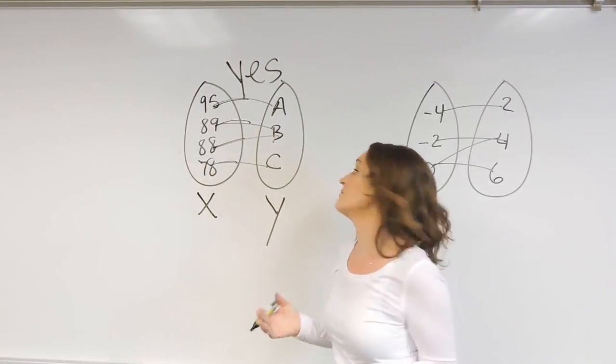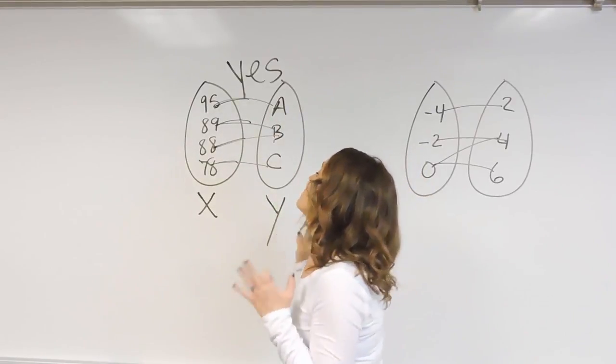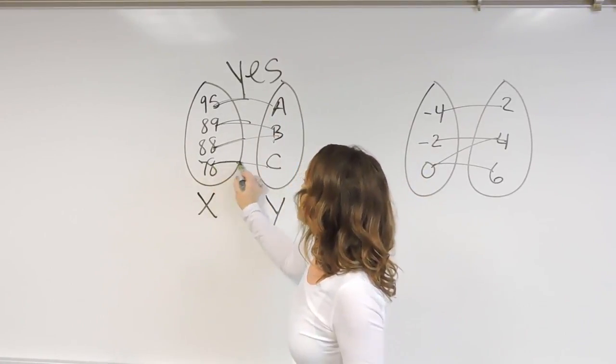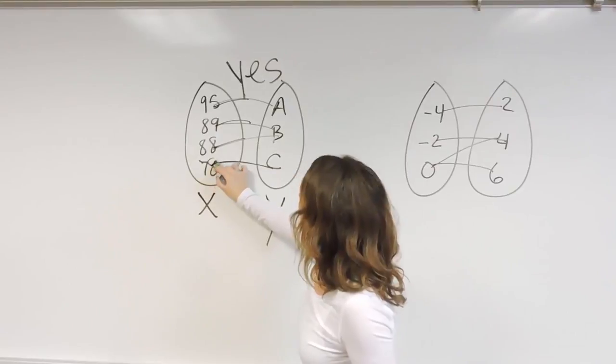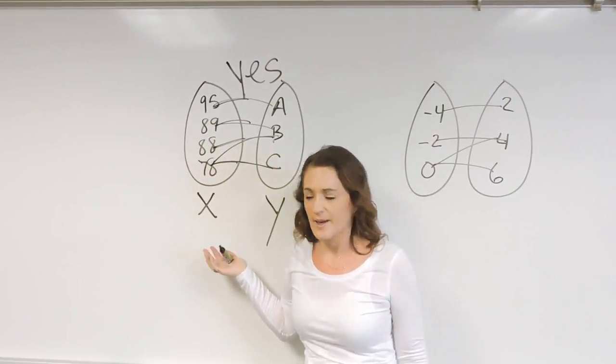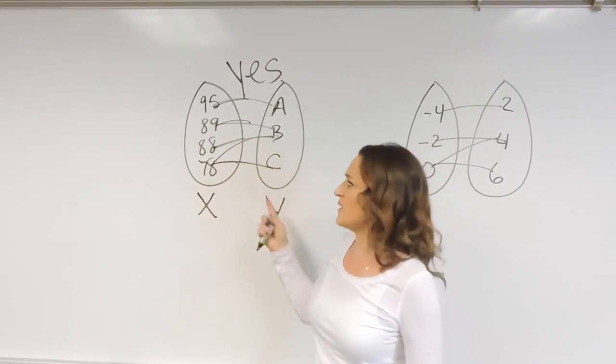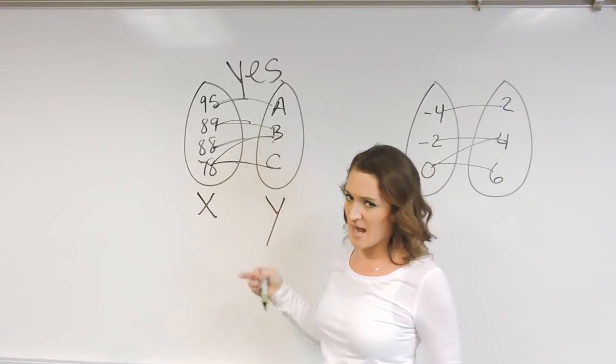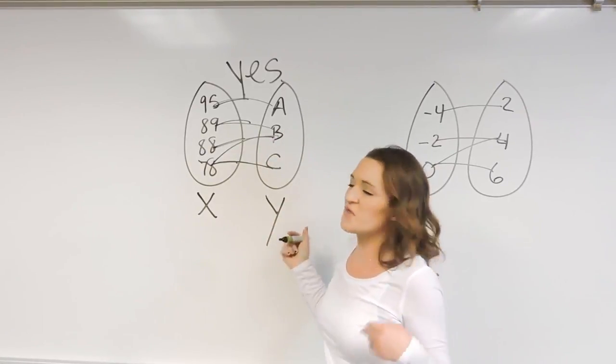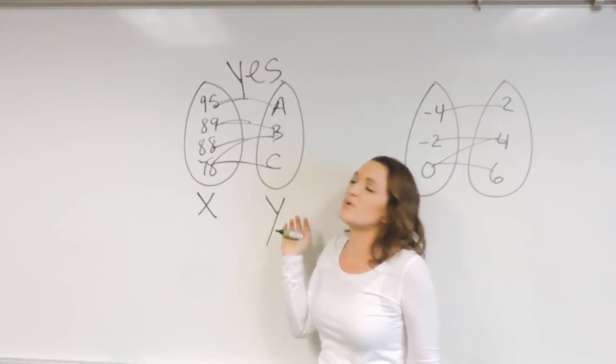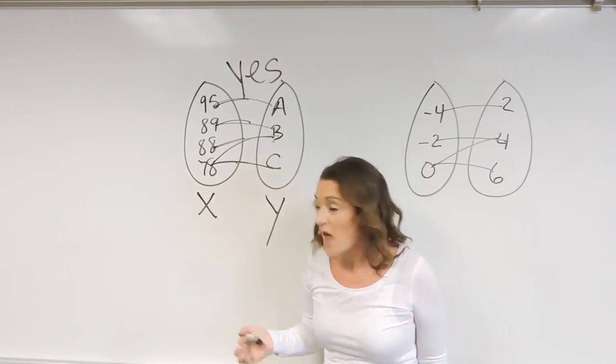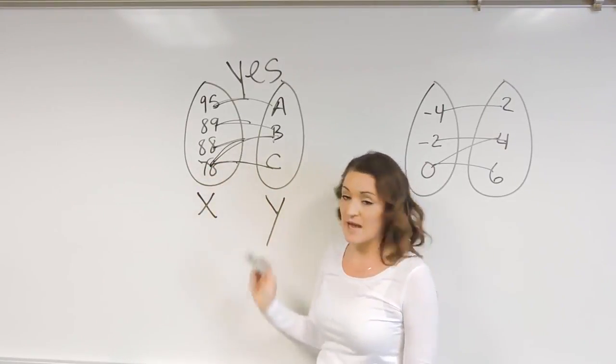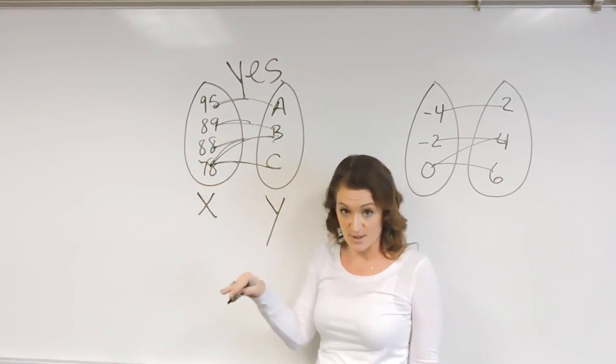A non-example: if we would have had maybe 78 is a C, but then 78 also goes to a B. 78 cannot be a B and a C at the same time. That just doesn't really make sense. That would be an example of what a function would not be. If I had more than one line coming out over here on the left-hand side, that's a no.